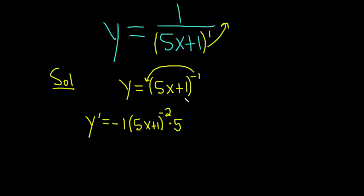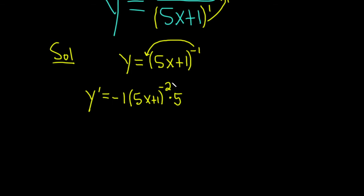An alternative would have been to use the quotient rule, but that would have been a little more work. So again, you bring down the negative 1, leave the inside untouched, subtract 1, and then multiply by the derivative of the inside. I'm going to put the 5 in the front. So this is y prime equals -5(5x+1) to the negative 2.